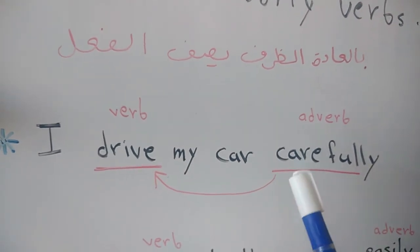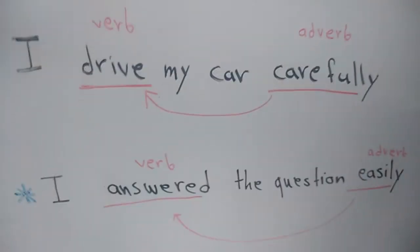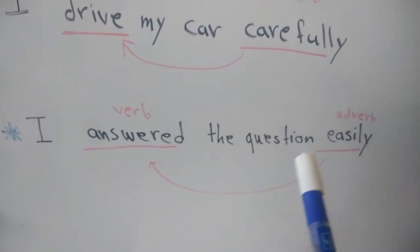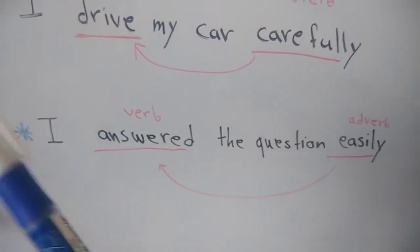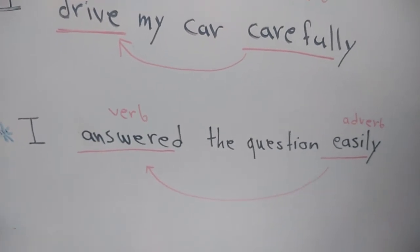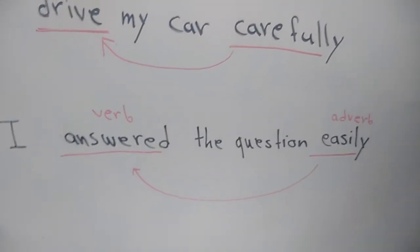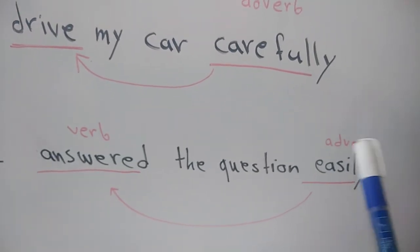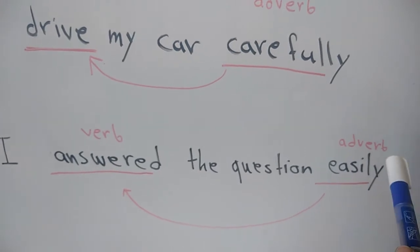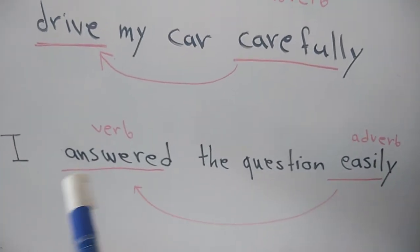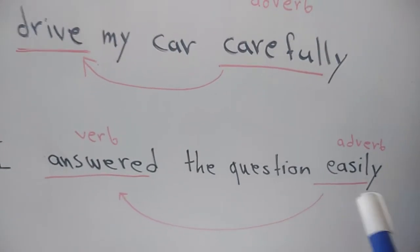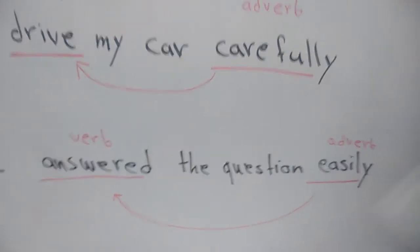Look at the second sentence: 'I answered the question easily.' I هو ضمير، answered هو الفعل، the question هو اسم، وeasily بسهولة هي الـ adverb. شوفوا كلمة easily — مين وصفت؟ وصفت الـ verb اللي هو answered. أنا أجبت بسهولة — يعني طريقة الإجابة كانت بسهولة.